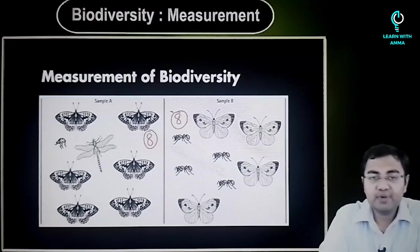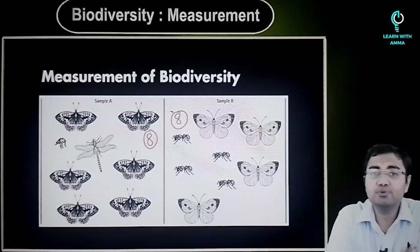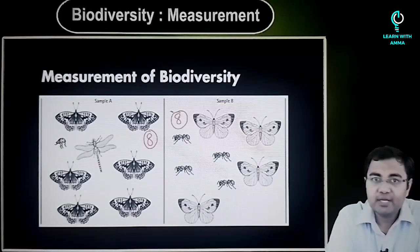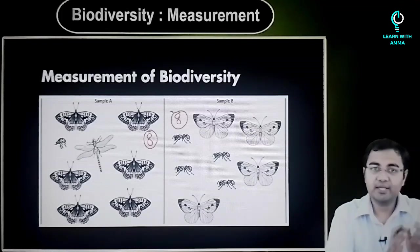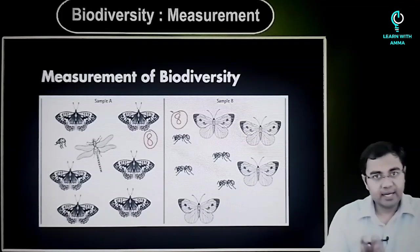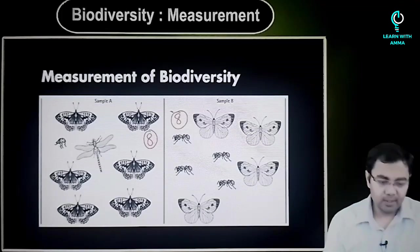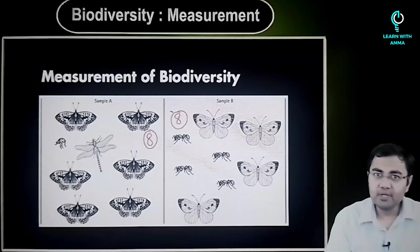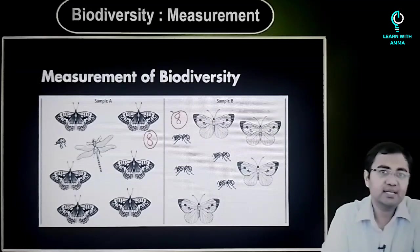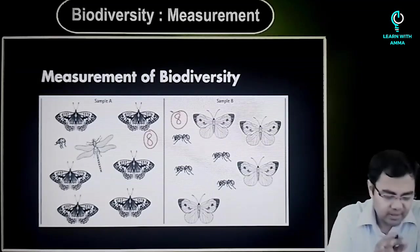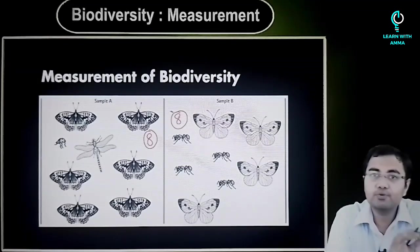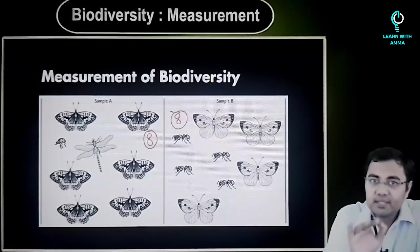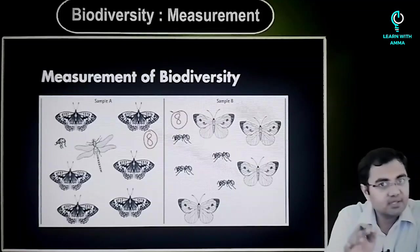So if I just have to count the sheer number, I know that there are 8 and 8. So is this the right way? Can we say that the diversity of both the samples is the same?